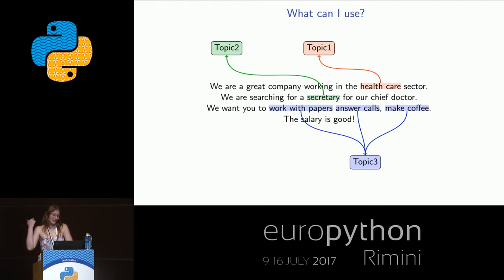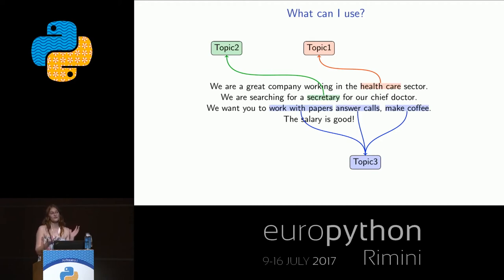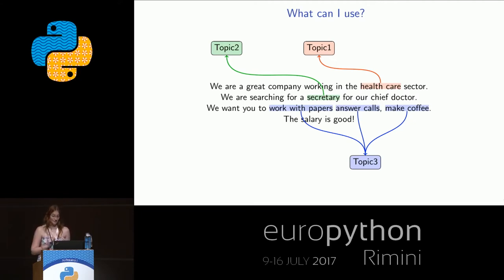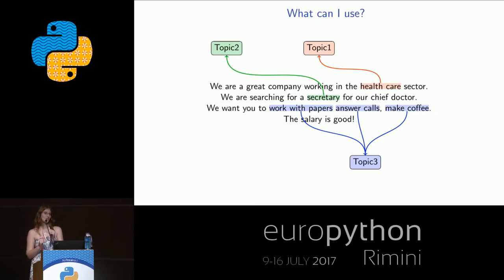If you want to read about LDA, I have links at the end of my presentation. Basically, you teach this model on several texts and give it the number of topics you want to generate from all those texts. In the end, you get something like a regression with keywords and their weights, and for each topic you get a different regression. You throw text against the regression and get a score, then compare scores and say the highest one is our topic.